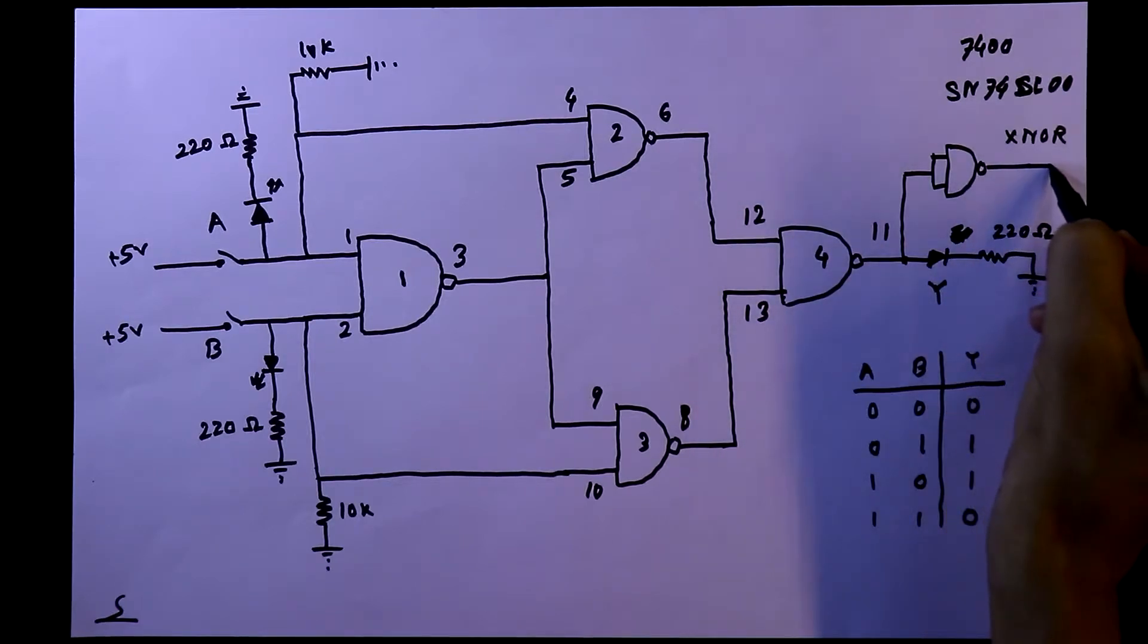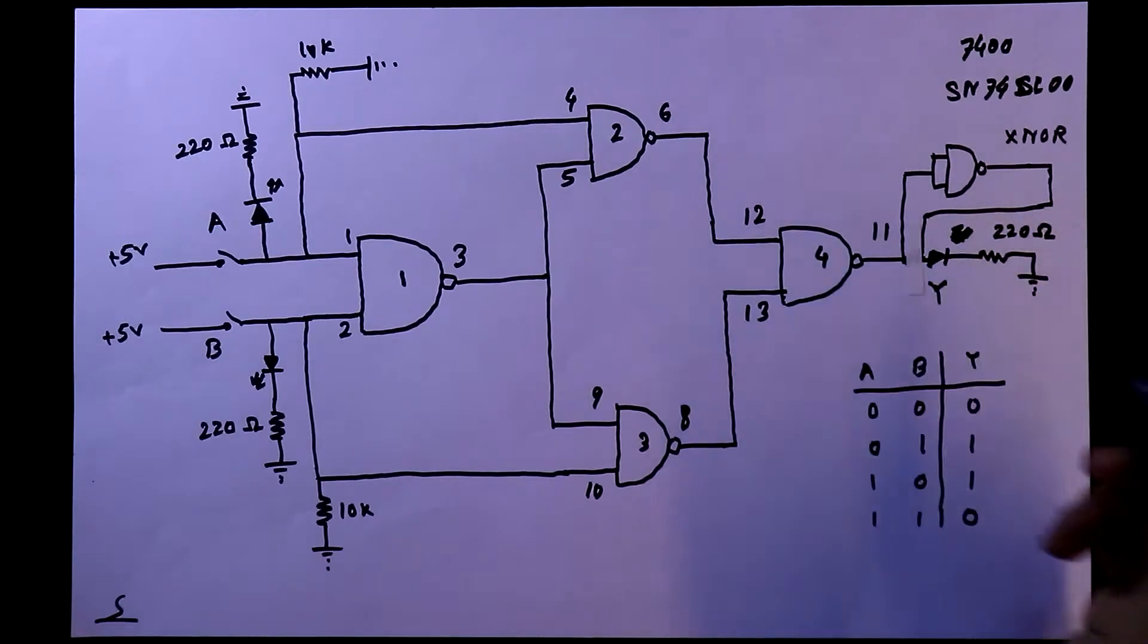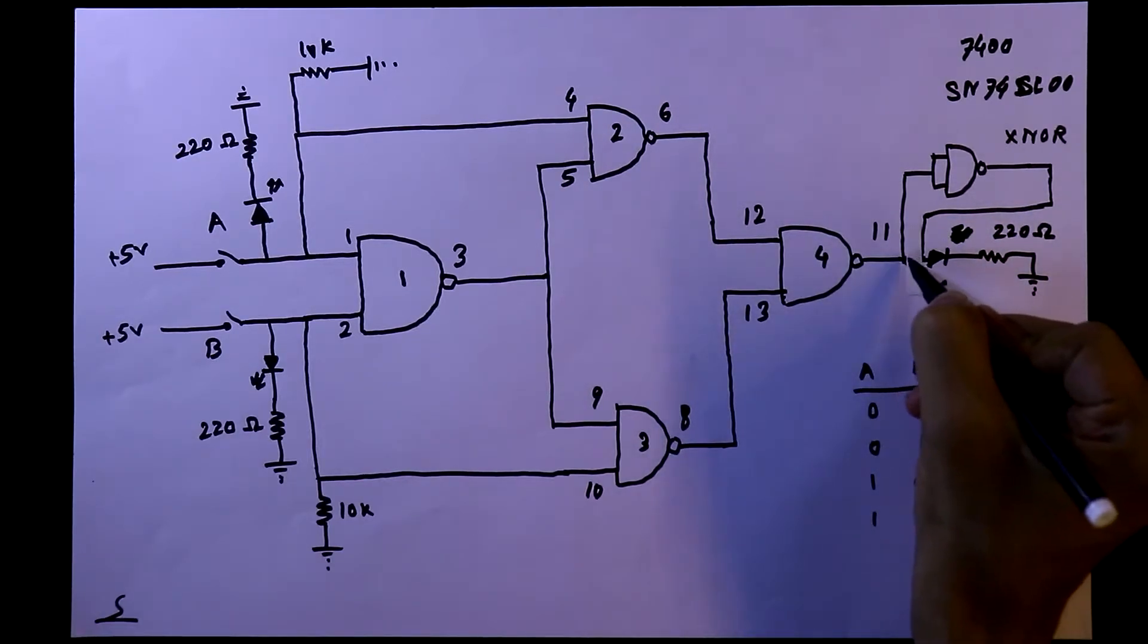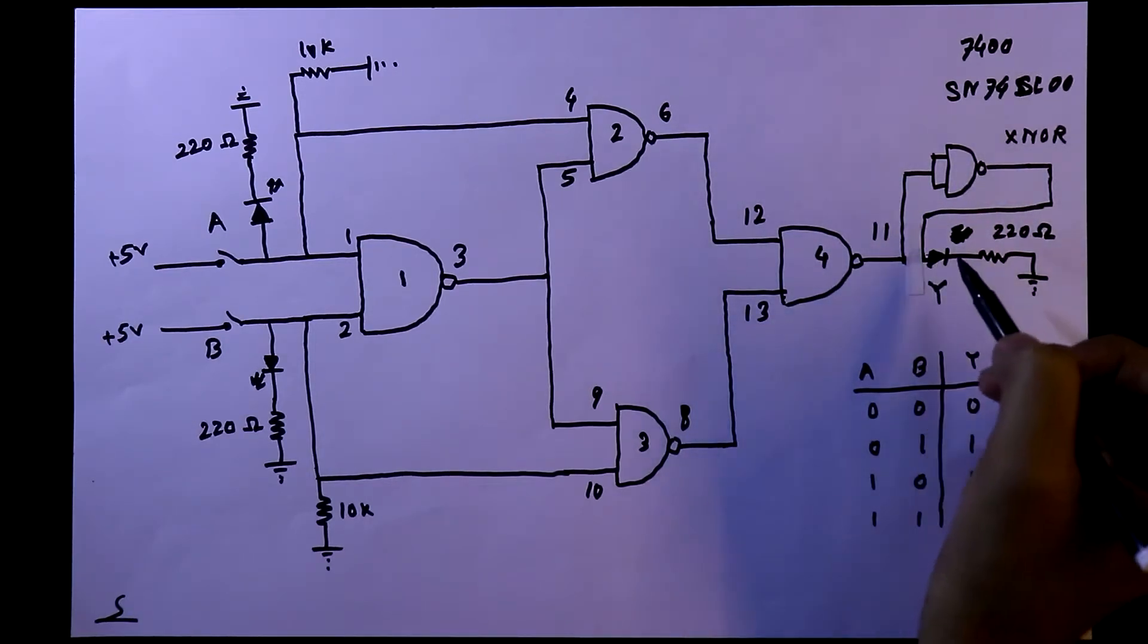We'll connect the LED in this. This is connected to here. This is disconnected. This is connected to the input of this NAND gate and then it is connected to the LED.